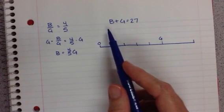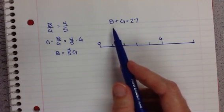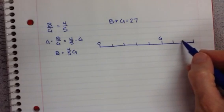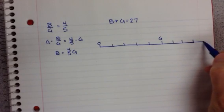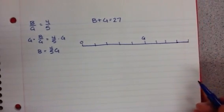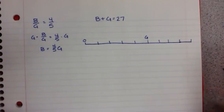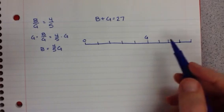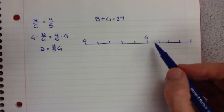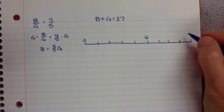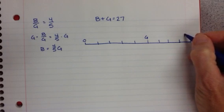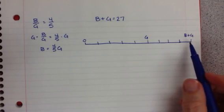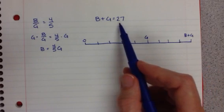We know that if girls are going to be 5 parts, boys are 4 parts. So here's our 5 parts, 1, 2, 3, 4, 5. Add another 4 parts, 1, 2, 3, 4. And this becomes B plus G. Well, B plus G is equal to what? 27.